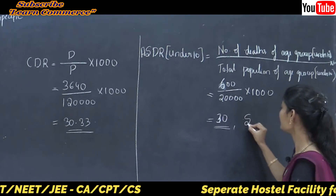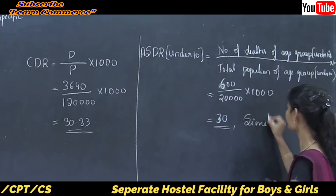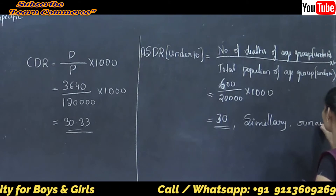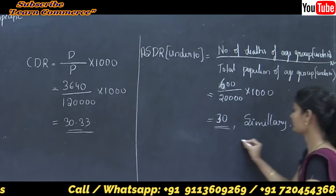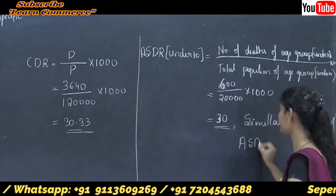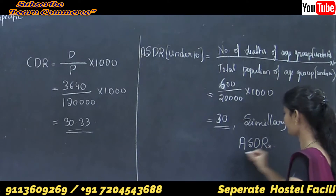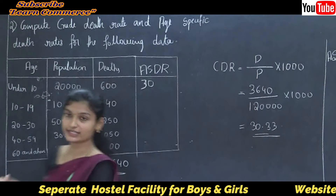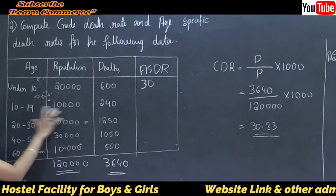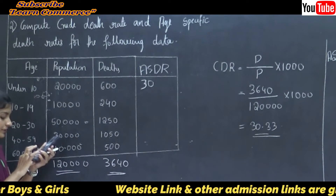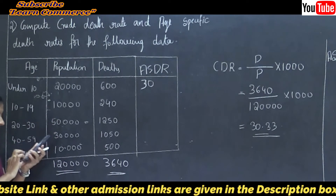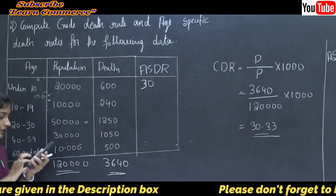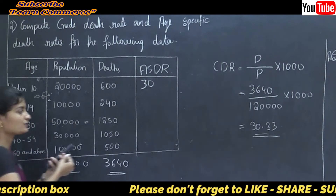Similarly, the remaining age-specific death rates: for age group 10 to 19, deaths are 240 divided by population 10,000 into 1000, that is 24.